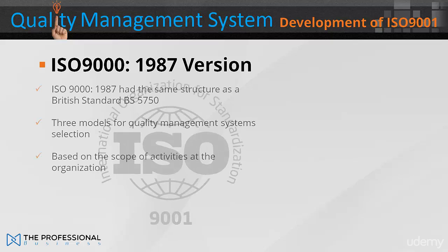In 1987, the British government persuaded the International Organisation for Standardisation, the ISO, to adopt the BS 5750 as an international standard. The international standard was named the ISO 9000.